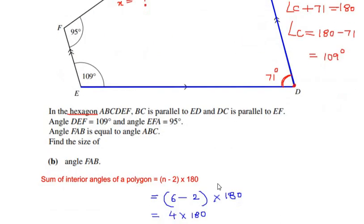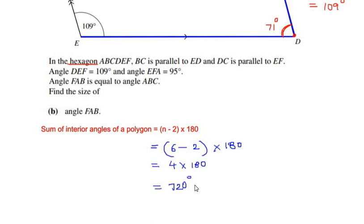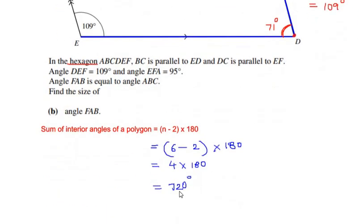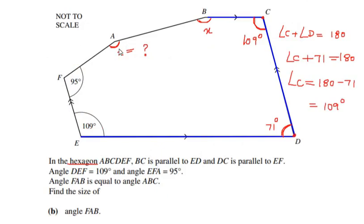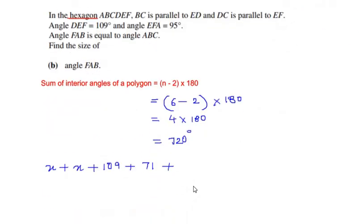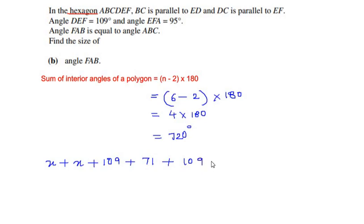The total interior angles of this hexagon sum to 720 degrees. Now let us add all the angles and equate them to 720. Angle A is x, angle B is x, angle C is 109, angle D is 71, angle E is 109, and angle F is 95 degrees. All of these sum to 720 degrees.